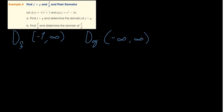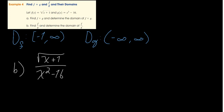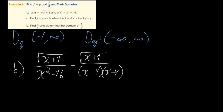For part b, f divided by g is the square root of x plus 1 over x squared minus 16. I noticed this is a difference of squares, so I'll factor it. Now for the domain — it's going to be the same intersection as before, but since it's division, we also have to exclude values that make the denominator equal to zero.